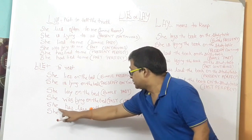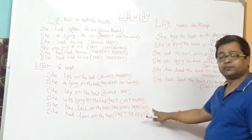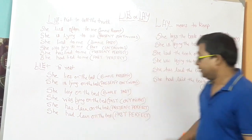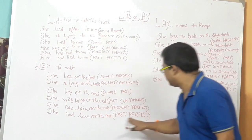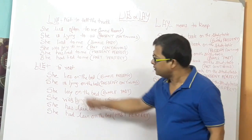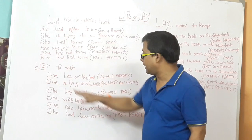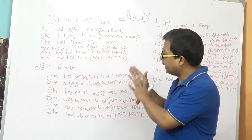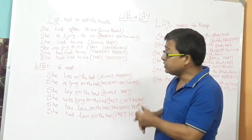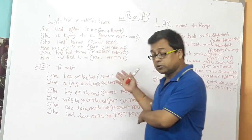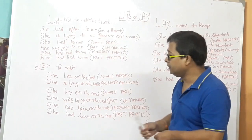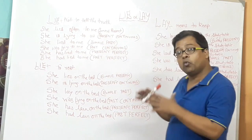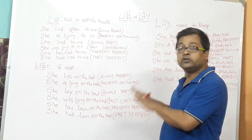In present perfect, the third form of lie is 'lain,' so 'she has lain on the bed.' In past perfect: 'she had lain on the bed.' So the past form of the word lie meaning 'to rest' is lay. The word L-I-E in one sentence may mean 'not to tell the truth,' and in another sentence it may mean 'to rest.' We have to understand the context in which the word is used.